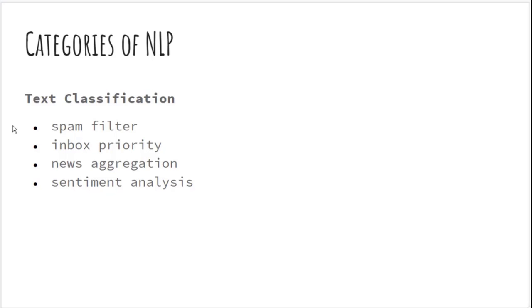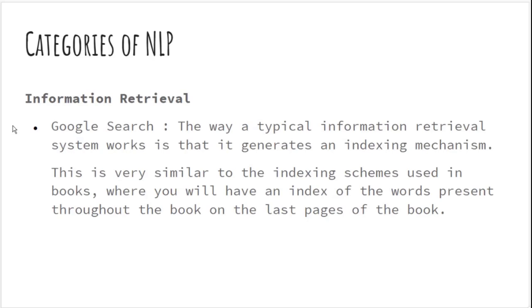Other text classification examples include inbox priority — is this email important or not — news aggregation, and sentiment analysis, which asks whether a text has a positive or negative vibe.